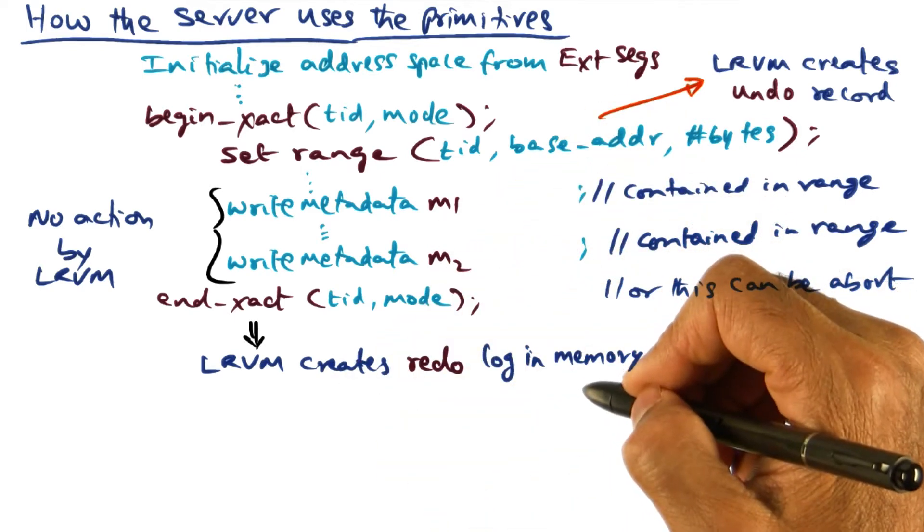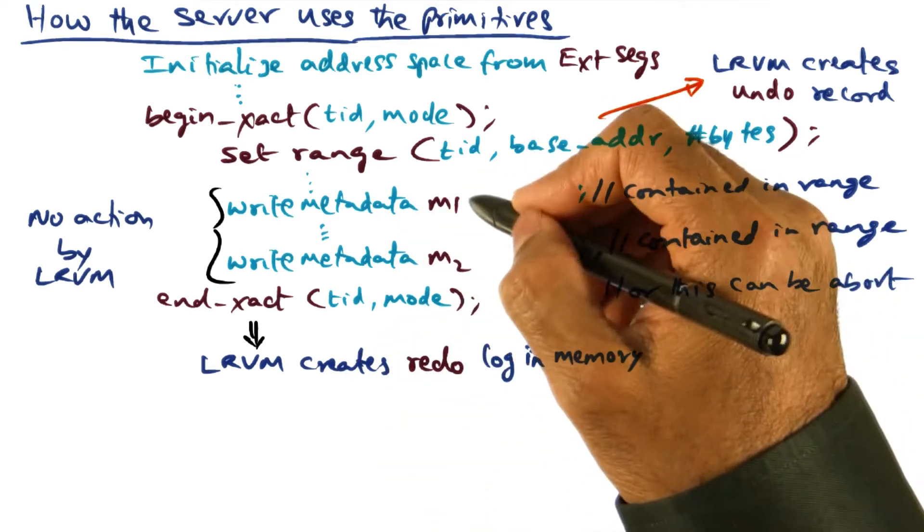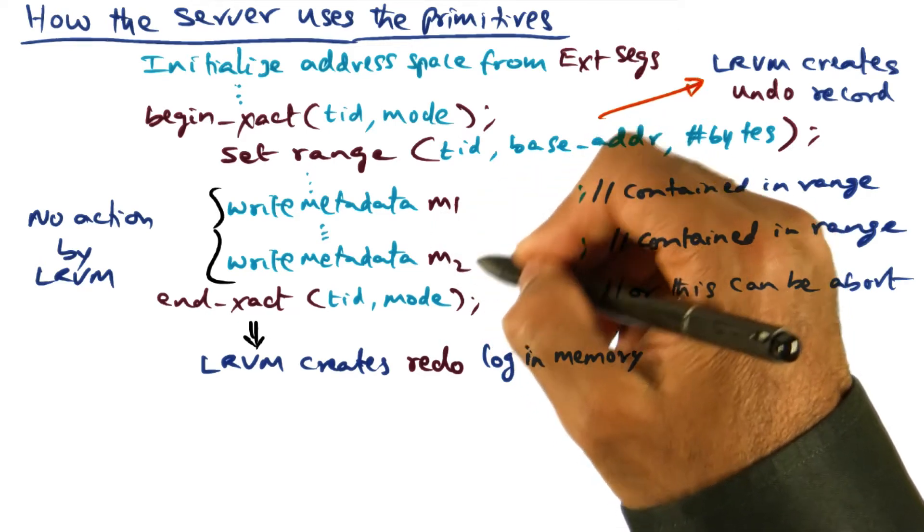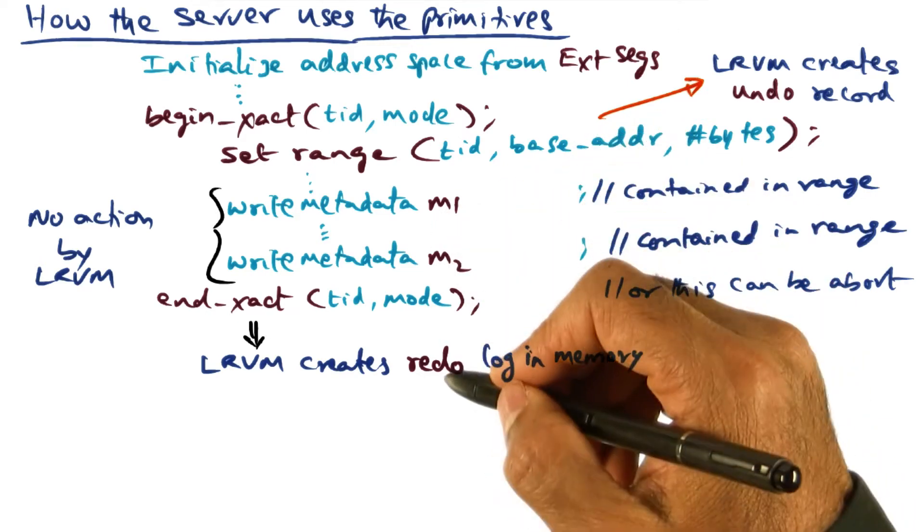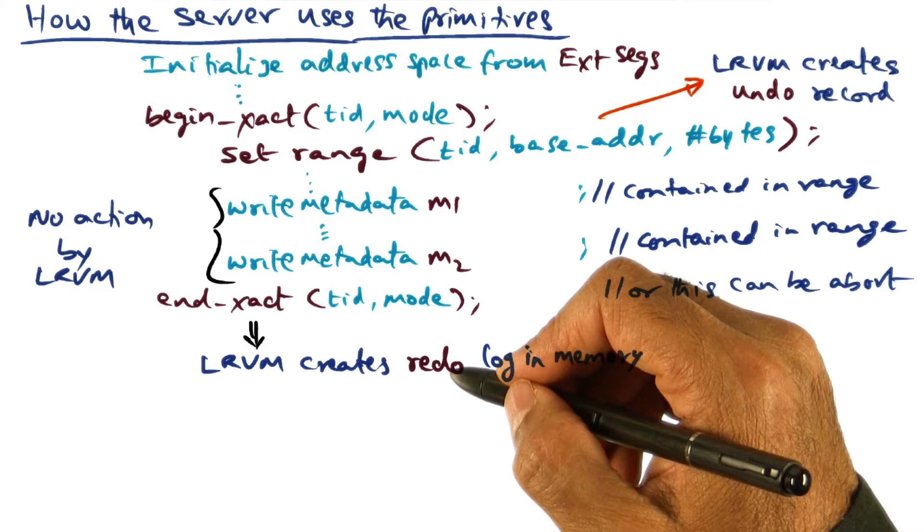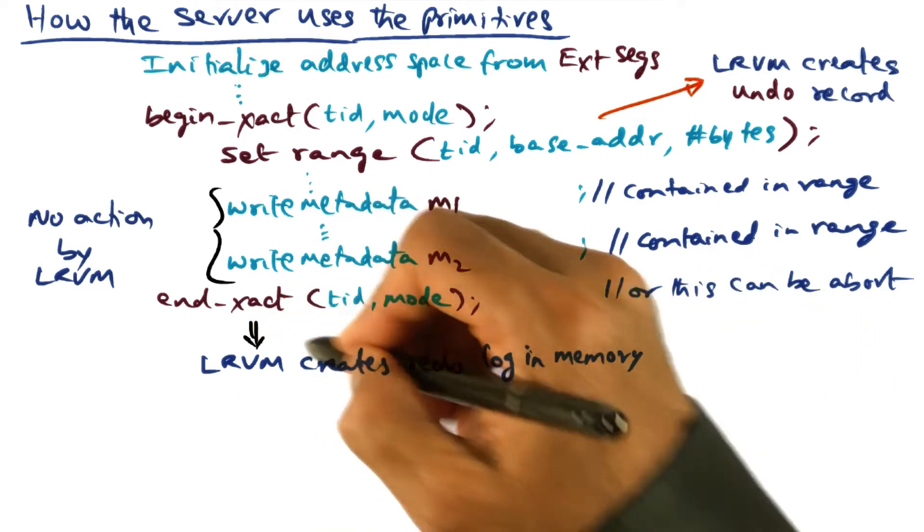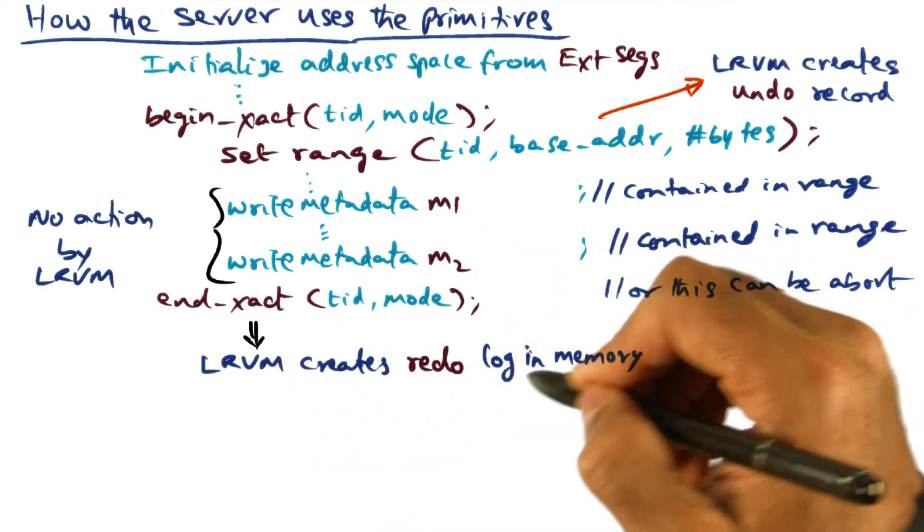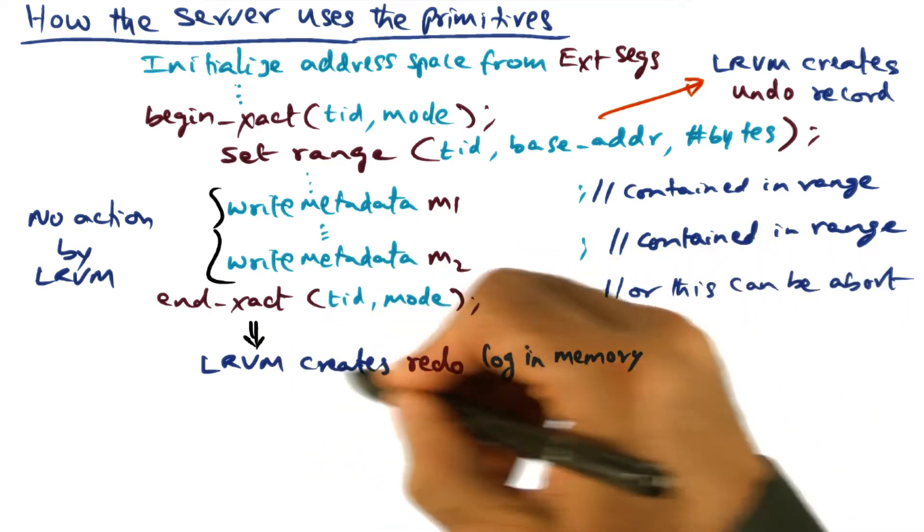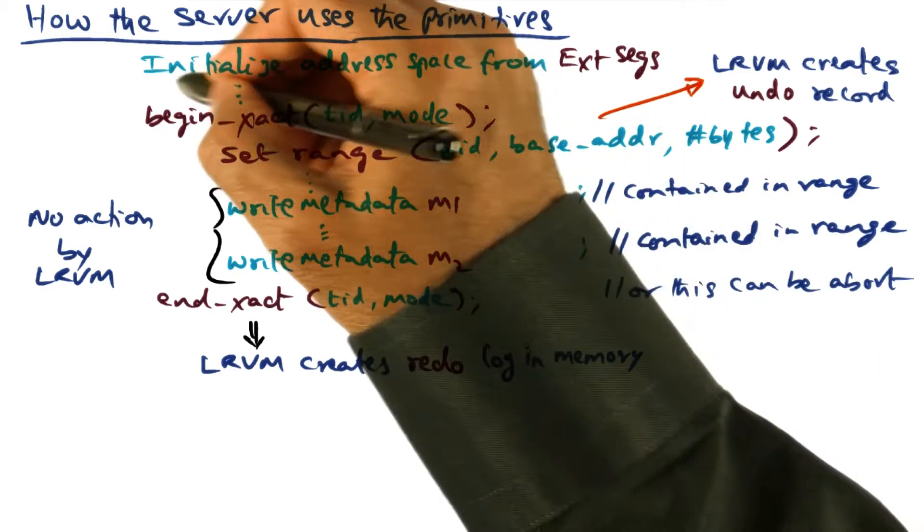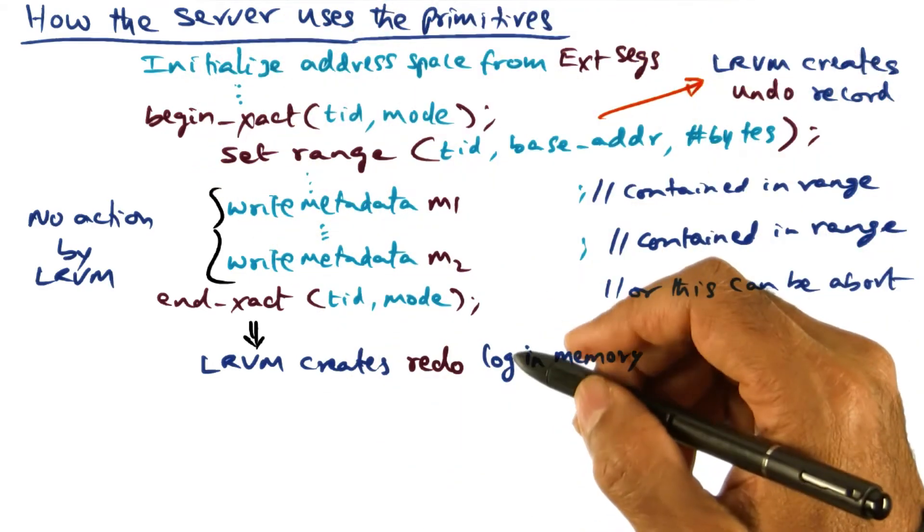Now this redo log is the changes that have been made to the in-memory versions of the persistent data structures that have not yet been committed to the disk in terms of the external data segments. It's now available at this point, at the end of end transaction. It's available as a redo log entry in the log segment, which was initialized by this application.